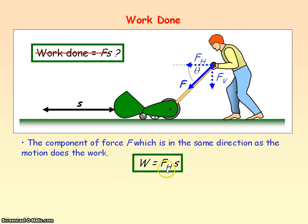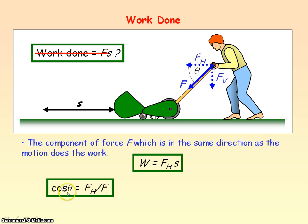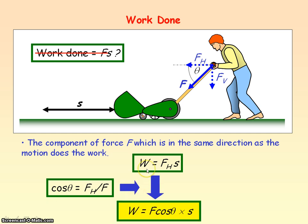So the work done is the horizontal component of the force times the distance S. To resolve force F to get the horizontal component: the horizontal component is adjacent to the angle and force F is the hypotenuse, so we need to use the cosine term. cos θ equals the adjacent divided by the hypotenuse, so the horizontal component FH equals F cos θ. Substituting into the equation for work done, work done equals F cos θ times S.